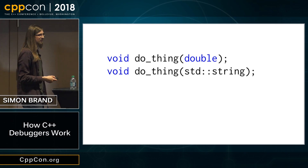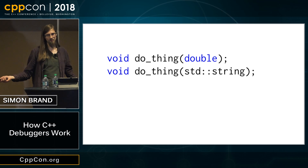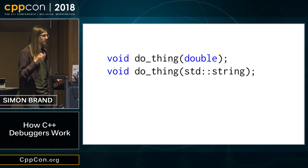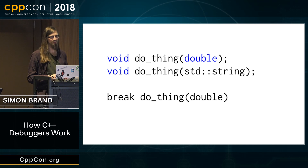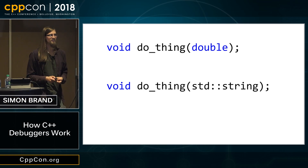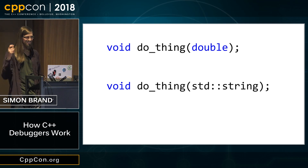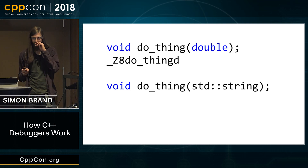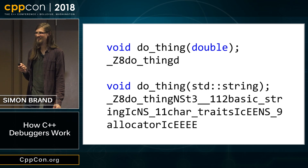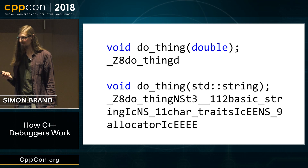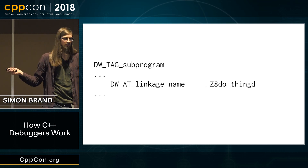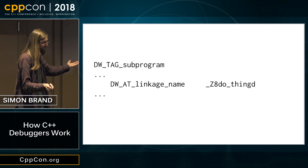What about overloaded functions? Most things so far have applied to assembly or C, but in C++ we can overload functions. What happens if we want to set a breakpoint on just `do_thing(double)` and not `do_thing(string)`? What's different about these two when compiled? Mangling. `do_thing(double)` will be mangled one way, `do_thing(string)` another way. We can mangle the name and look for the DIE with that linkage name, look at the low PC, rinse and repeat.